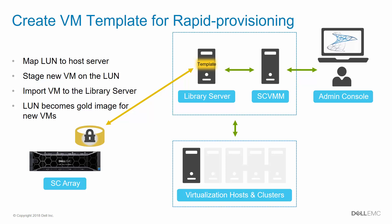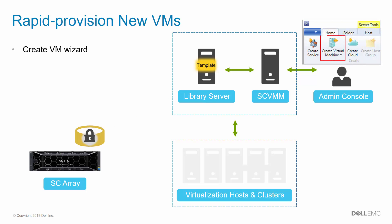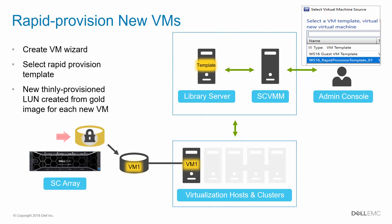Now let's deploy some new guest VMs to see rapid provisioning in action. Use the SCVMM admin console to launch the Create Virtual Machine wizard. For the template, choose the Rapid Provision template from the list. A new, thinly provisioned view volume is created from the gold source and mapped to the target host. This LUN consumes no space initially. When the new VM is powered on, only new data will consume space on this LUN. For unchanged data, the new VM will reference the gold source volume. For each new VM deployed, this process is repeated, as shown here with VM2 deployed to another target host managed by SCVMM.